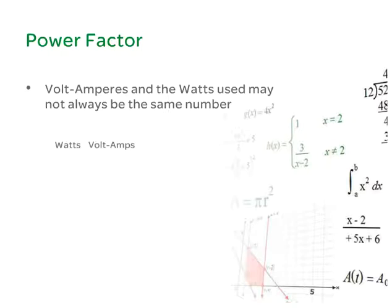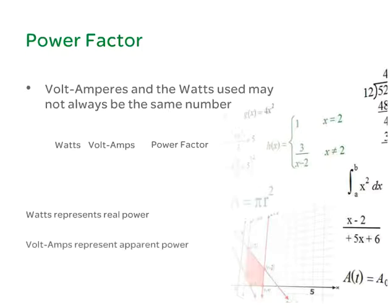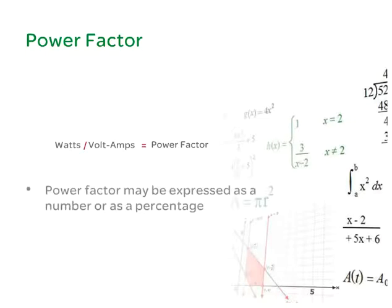The key to understanding the relationship between watts and VA is the power factor. Watts represent real power and volt-amps represent apparent power. The power factor is the ratio of real power to apparent power and can be expressed as a number between 0 and 1 or as a percentage. If a given UPS has a watts rating of 8 and a VA rating of 10, then its power factor is 0.8 or 80%.